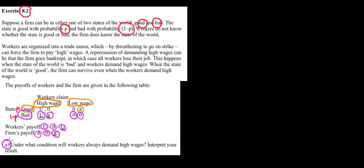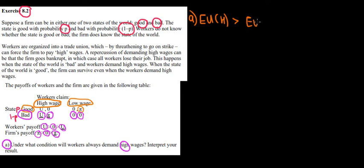In part (a), we ask: under what condition will workers always demand high wages? We deal with probabilities — good versus bad economy — meaning we have uncertainty and must work with expected values. Since we think about the workers, they maximize their own utilities. So they want the expected utility of demanding a high wage to be greater than the expected utility of demanding a low wage.